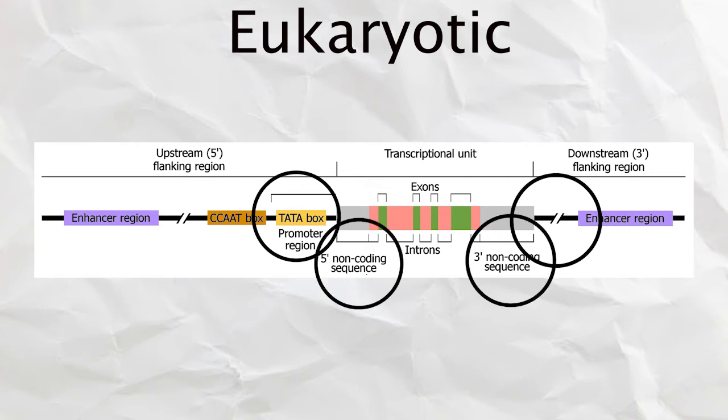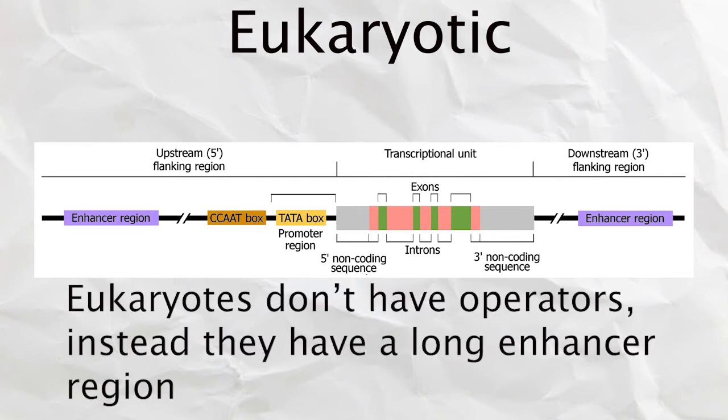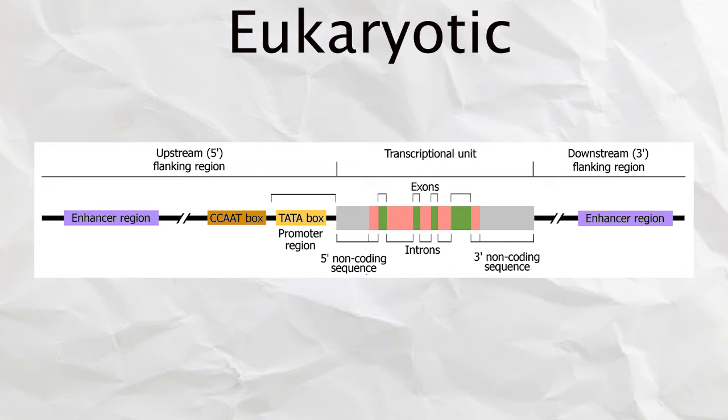The big difference between the two is that instead of an operator, eukaryotes have long enhancer sequences that transcription factor proteins latch onto. They either aid or block the RNA polymerase from interacting with the DNA. Also, eukaryotic DNA has introns and exons.